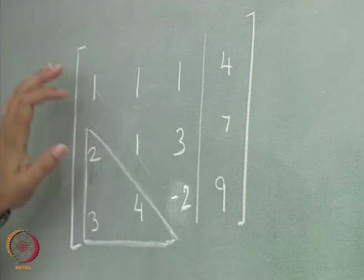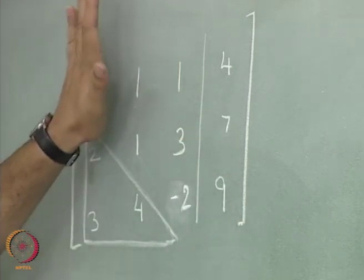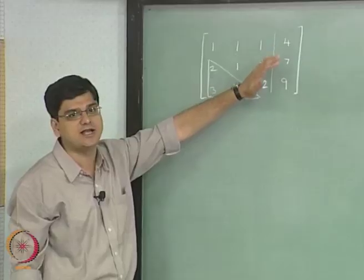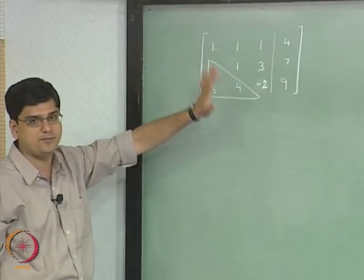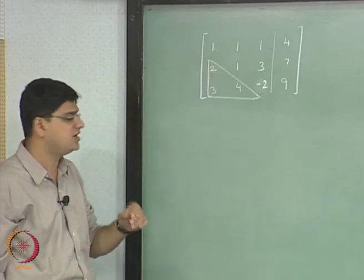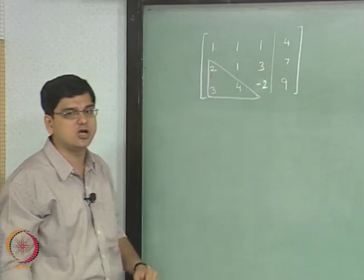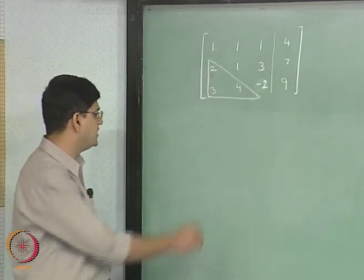When we did that we ended up with an upper triangular matrix, that means the values at and above the diagonal may or may be non-zeros, whereas all the values below the diagonal are definitely going to be equal to 0. That is what the Gauss elimination process is going to lead us to.